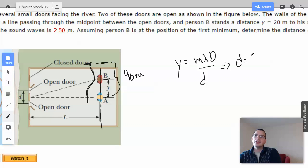The distance between the doors is going to be 1 times the wavelength, which is 2.5, and then we have the distance from the wall, L, which is 100, over 40.